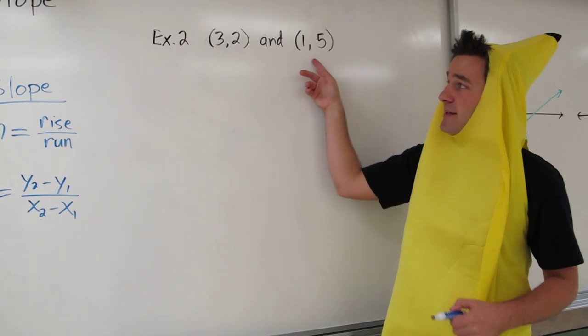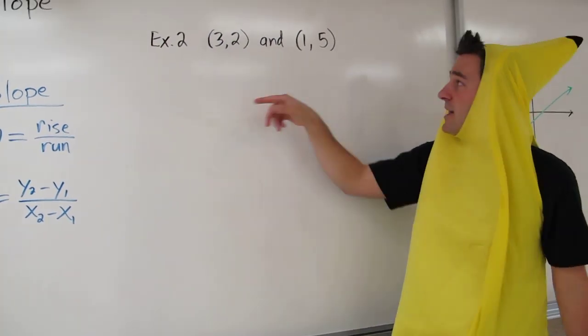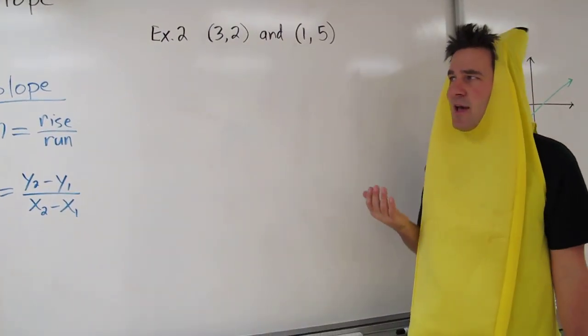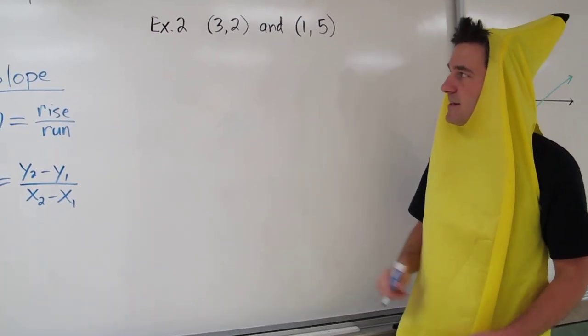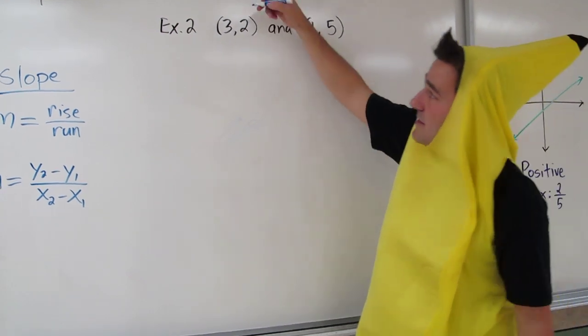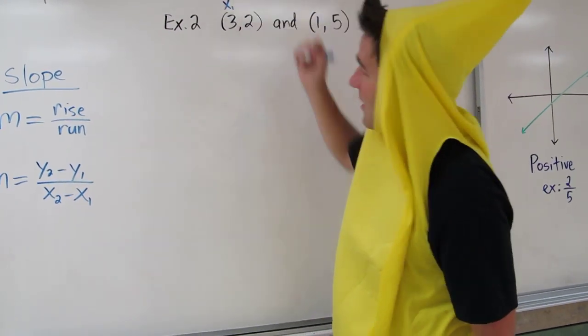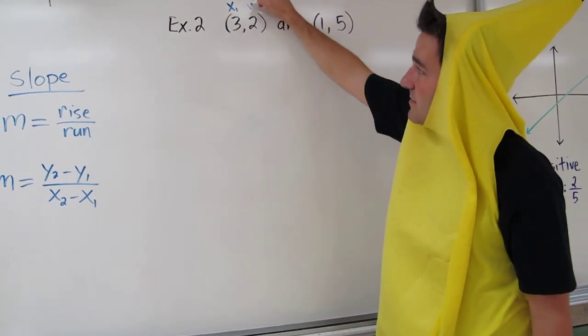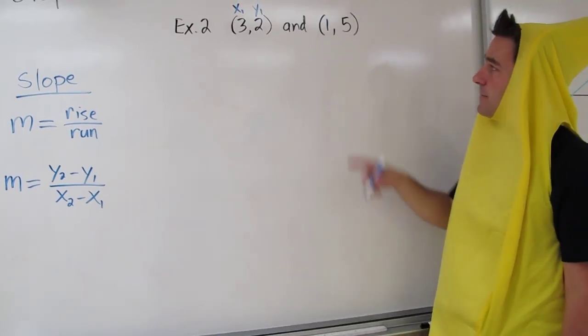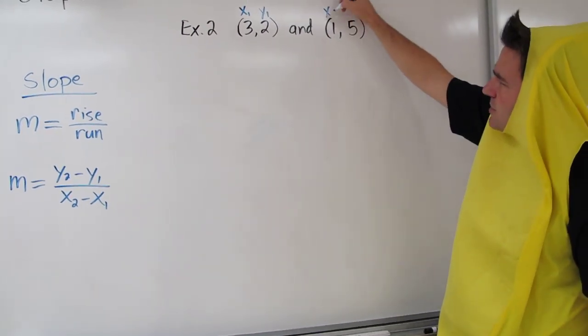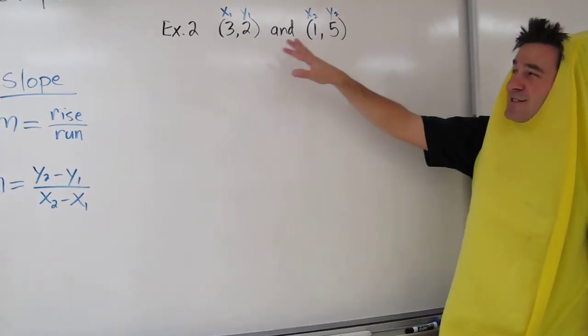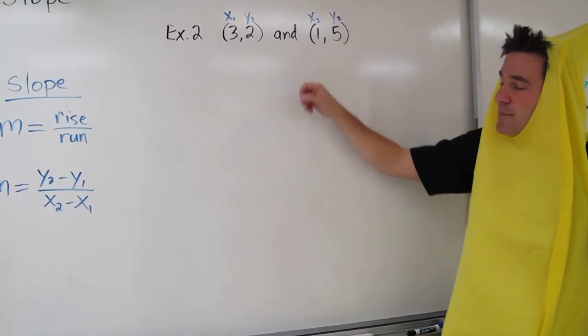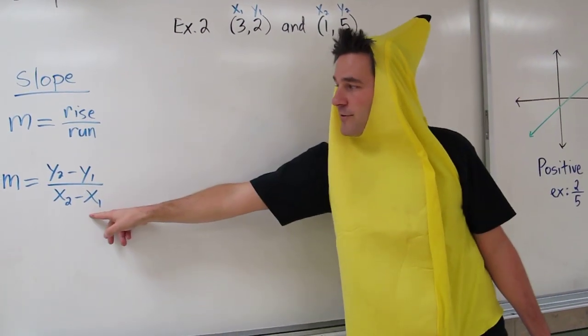Here we have two points. Let's call this point 1 and this point 2, and we're going to try to calculate the slope of the line running between those points. Since this is point 1, this is the x coordinate of point 1 and this is the y coordinate of point 1. Here's the x coordinate of point 2 and the y coordinate of point 2.